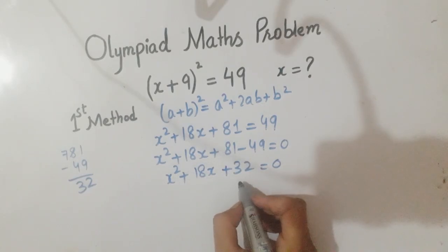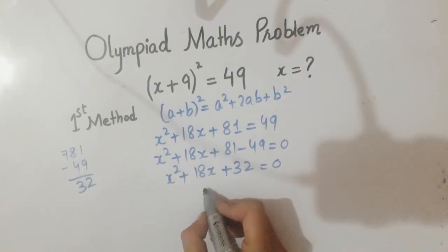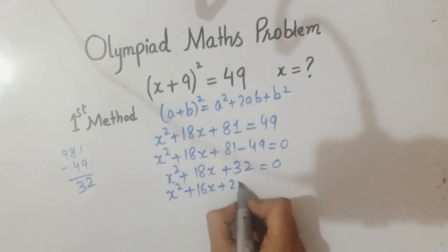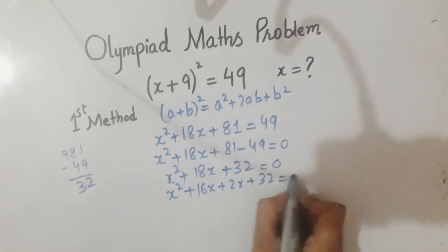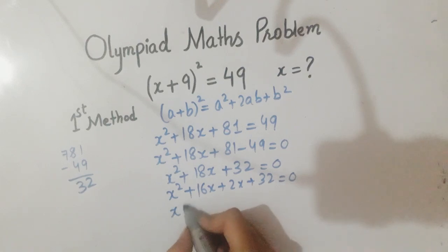Now we will make the factors of 32 such that when they are added gives 18. So 16 × 2 = 32, meaning 16x and 2x. So x² + 16x + 2x + 32 = 0. Now we will take x as common from this.